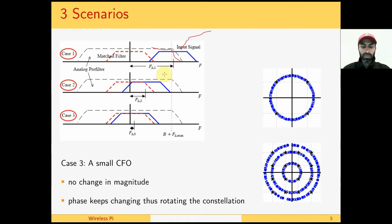In case 2, the received signal has a CFO which is within the bandwidth of the analog pre-filters but significantly outside the bandwidth of the match filter. In this case a reasonable amount of energy is filtered out and we cannot downsample the signal to one sample per symbol after match filtering.